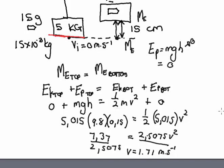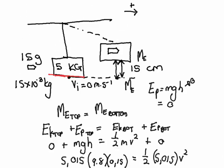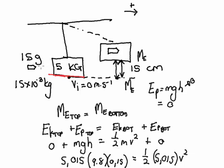Now let's look at the next part: calculate the magnitude of the velocity of the bullet just before it strikes the block. The first part looked at what happens after the bullet enters the block. What we're looking at now is what happens before the bullet and block become a system — the bullet just before it strikes the block. Therefore, we'll use the initial velocity of the block as zero meters per second.